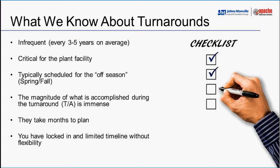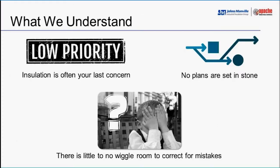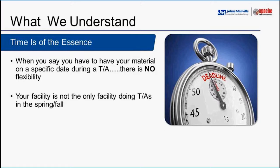You take months planning with a limited window locked in — whether it's two, three, or four weeks — and you don't have much flexibility to extend that. In fact, you'd like to shorten it if you can. Insulation is often your last concern — the last thing installed on pipes. We also know that no plans are set in stone. You find things once the turnaround begins that you couldn't plan for, and when something happens it's got to be fixed fast — time is of the essence.